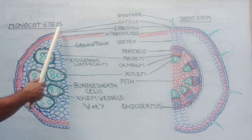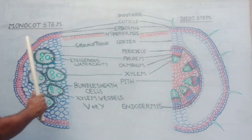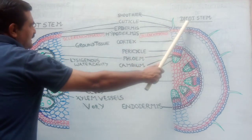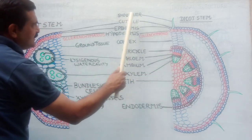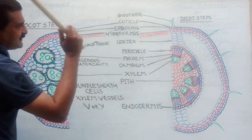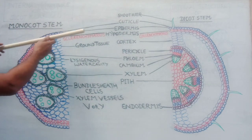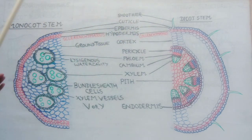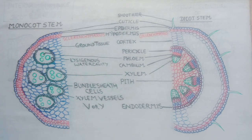The outermost covering is the cuticle in both sections. The difference is that in case of dicot stem some epidermal cells develop into multicellular soot hairs, while in monocot they do not. This is an important exam question.